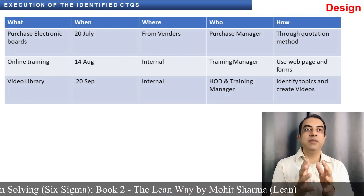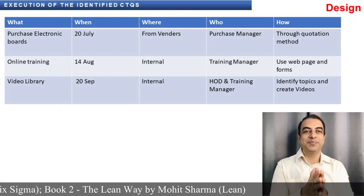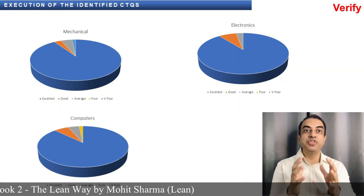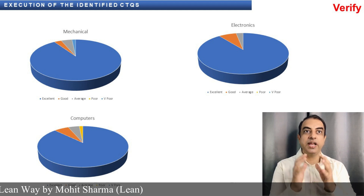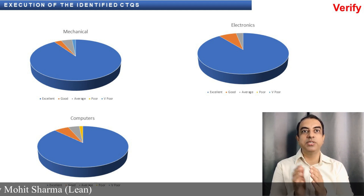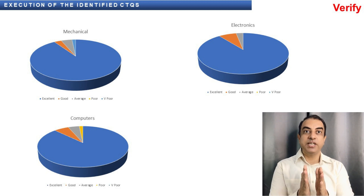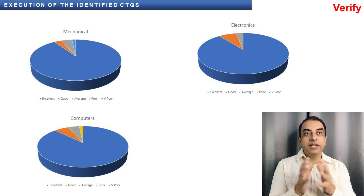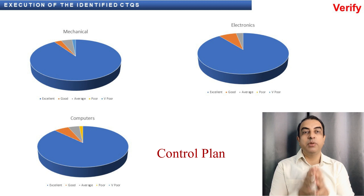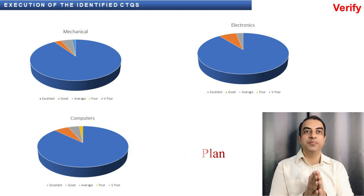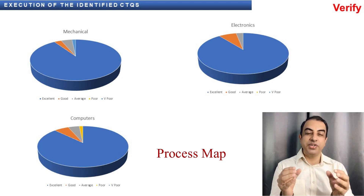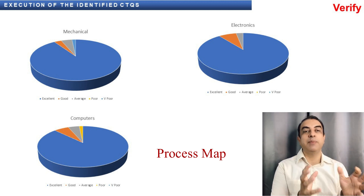Run a pilot and then move to the Verify stage. In the Verify stage, the new training module is executed and feedback is sought from students to validate its effectiveness. Data is plotted in a pie chart for the different departments in this case. Another important thing in this phase is to create a control plan to control the situation. If there is a process that you have created, then create a process map as well.